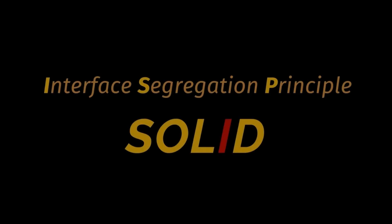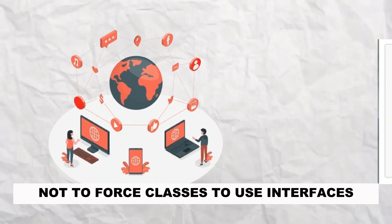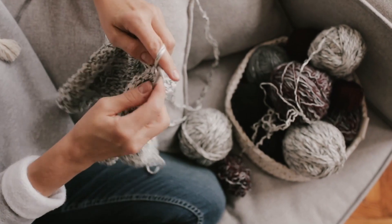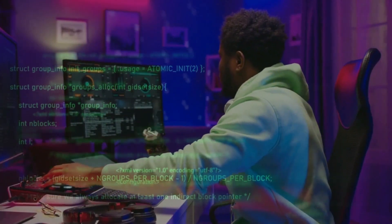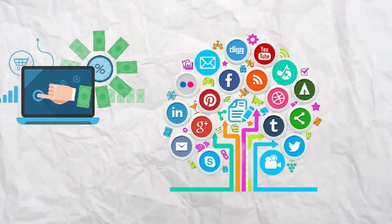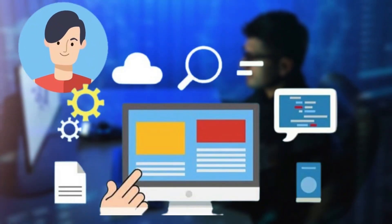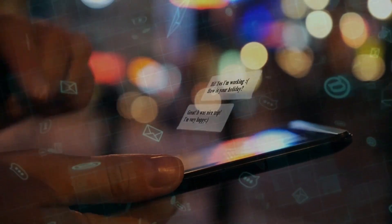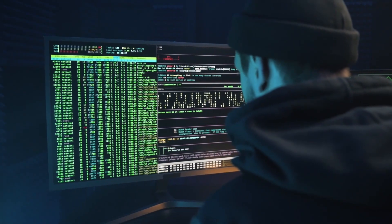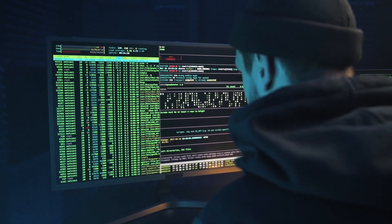Now onto the I, which stands for Interface Segregation Principle. It tells us not to force classes to use interfaces they don't need. It's like signing up for a gym membership and being forced to take knitting classes — great if you're into that, but why not keep them separate? Let's consider a software system for a digital content platform, which includes features for users to manage their profiles, upload content, and interact with other users through messages and comments. Initially, the system uses a single, bulky interface called User Actions that includes methods for all these features.